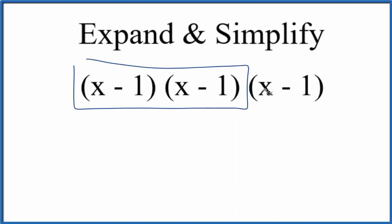Once we get that, we'll multiply x by everything we get, and then multiply negative 1 by everything we get. And that's how we'll simplify x minus 1 cubed.